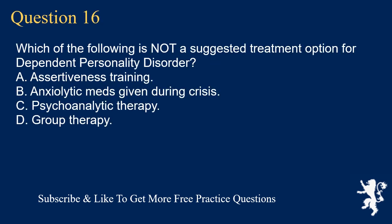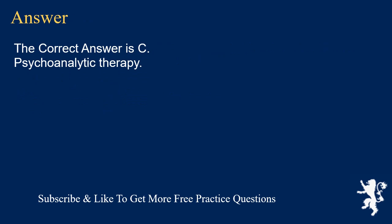Question 16. Which of the following is not a suggested treatment option for dependent personality disorder? A. Assertiveness training. B. Anxiolytic meds given during crisis. C. Psychoanalytic therapy. D. Group therapy. The correct answer is C. Psychoanalytic therapy.